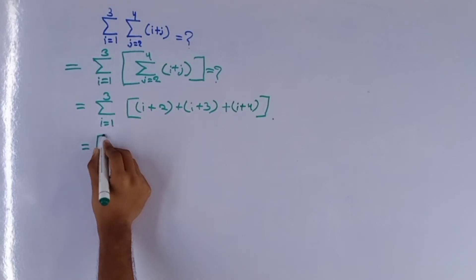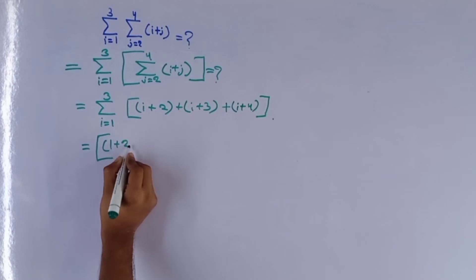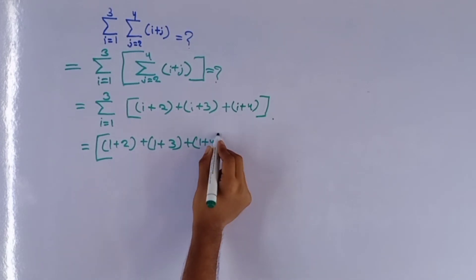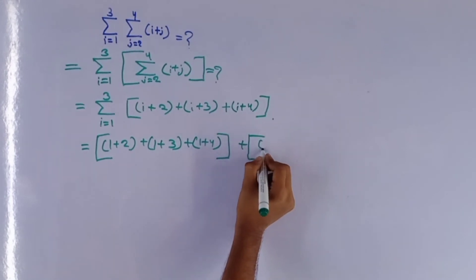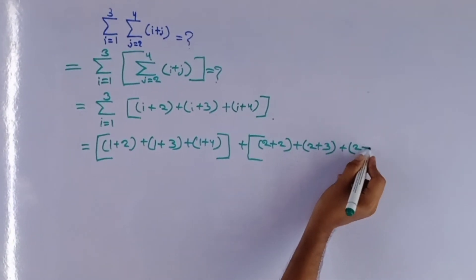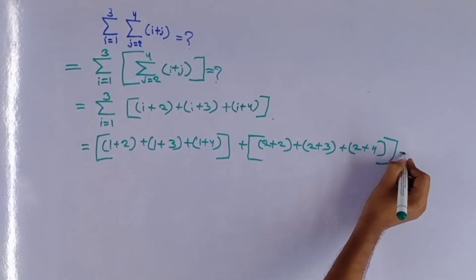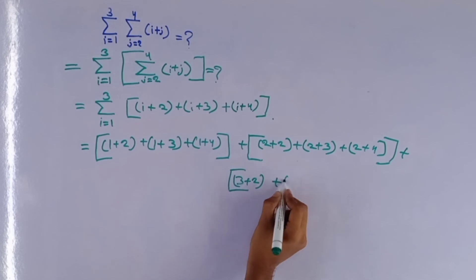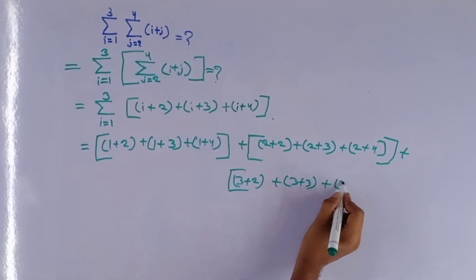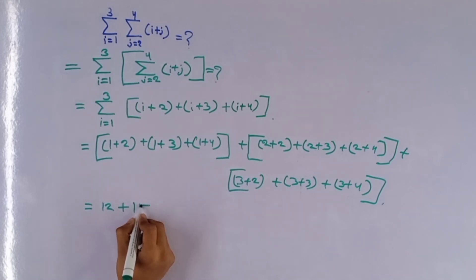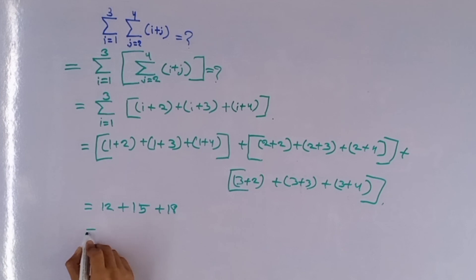Substituting i equals 1, 2, 3: (1+2) plus (1+3) plus (1+4), plus (2+2) plus (2+3) plus (2+4), plus (3+2) plus (3+3) plus (3+4), equals 12 plus 15 plus 18, equals 45. And that is the answer.